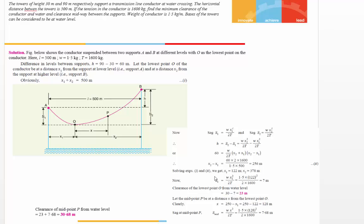You will get the sag as 7 meters. So 30 - 7 = 23 meters. The remaining sag is 7.68 meters. So 23 + 7.68 = 30.68 meters. It's as simple as that.